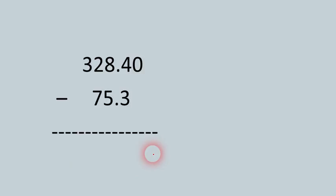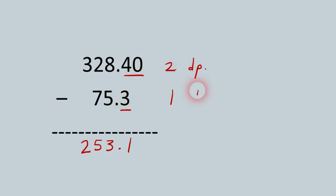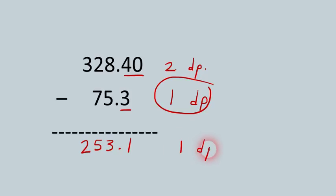Here's a subtraction problem — subtraction works the same way as addition. Typing it into the calculator gives about 253.1. The first number has two decimal places and the next has one decimal place. The rule is we always go with the fewest, so the answer can only have one decimal place. Sure enough, this already has one decimal place, so we accept the answer 253.1.